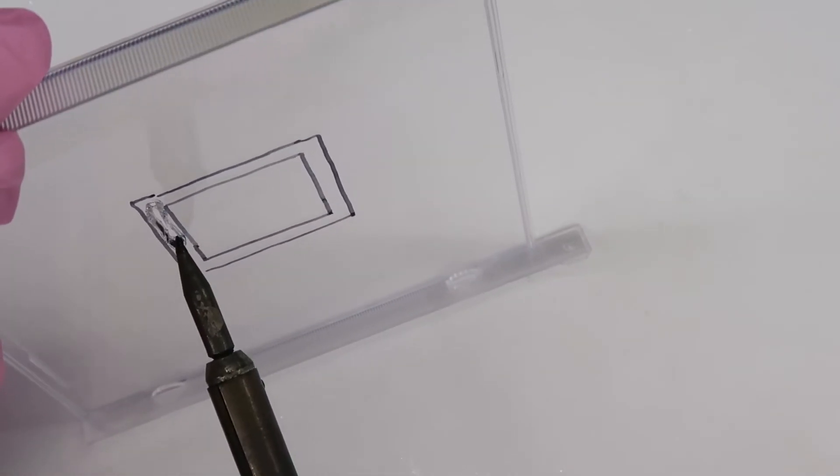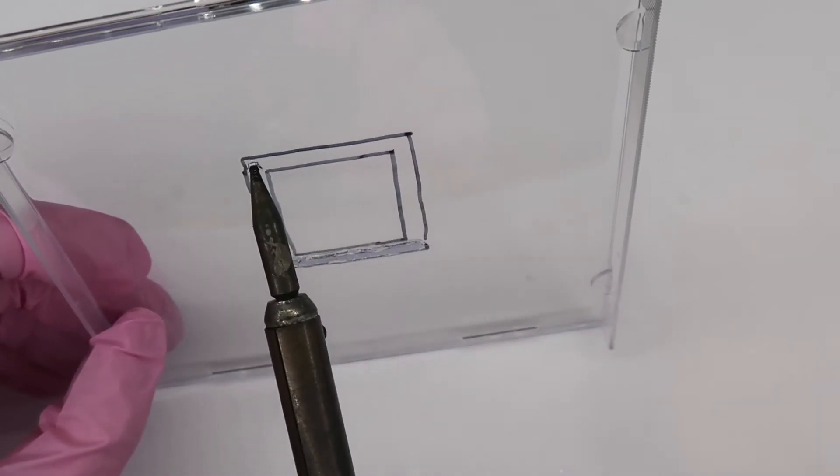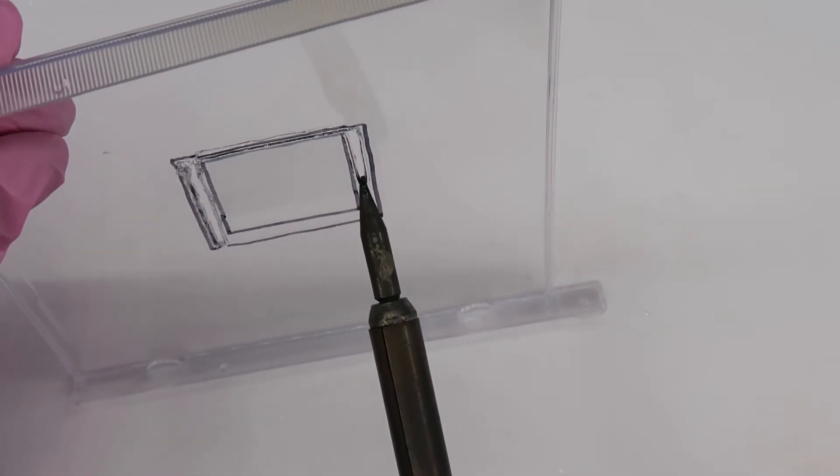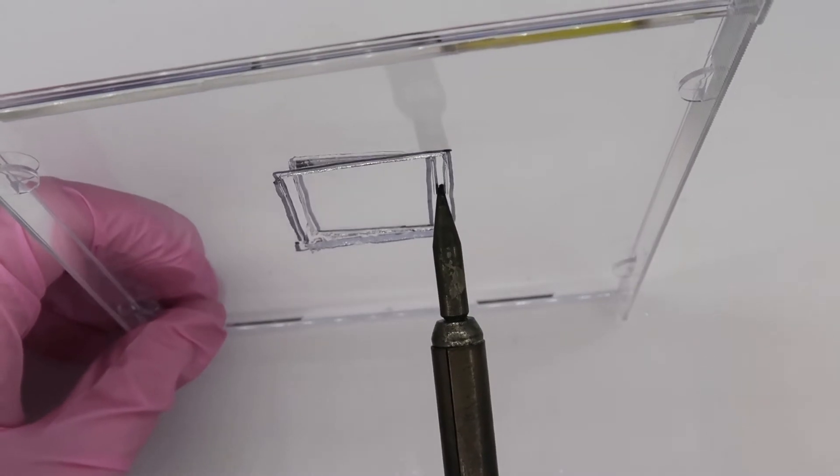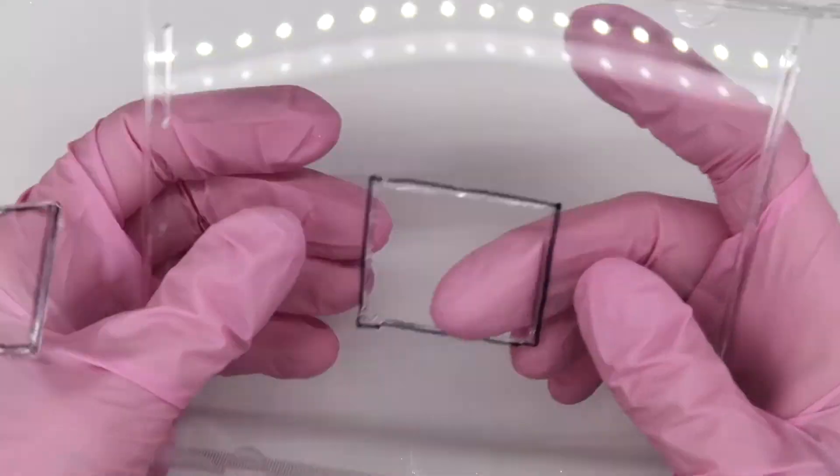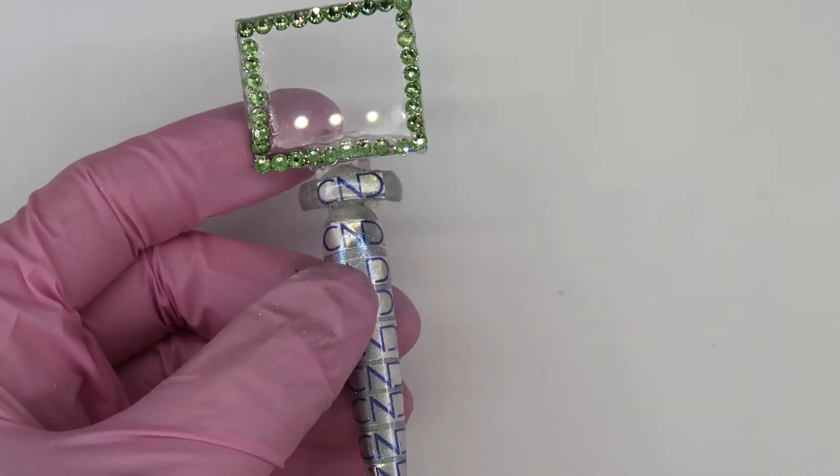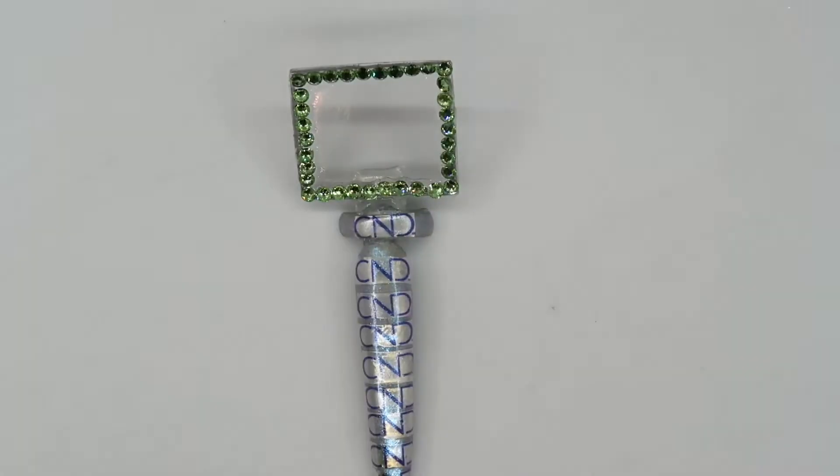Using a soldering tool very safely with adult supervision because it gets really hot, you can cleanly cut the CD disc to the shape that you want. And just like that, you've created a hologram nail.